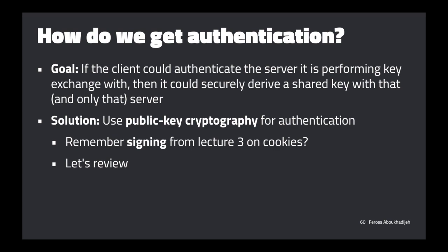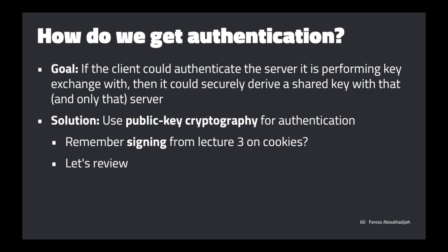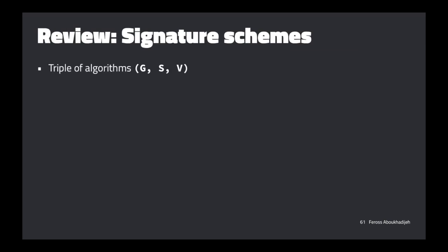So how are we going to add authentication? Our goal is for the client to figure out who it's talking to, so it can securely derive a shared key with that and only that server. I mentioned signing in lecture three when we talked about cookies — we introduced the way signing works using public key cryptography. We can add that onto Diffie-Hellman key exchange to get authentication.